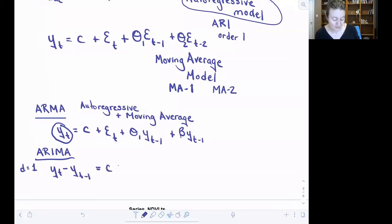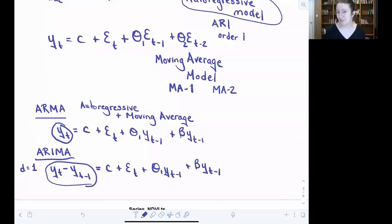Then I might fit y sub t minus y sub t minus 1 is equal to, and now, what we've been looking at for our modeling with the moving average component and the autoregressive component. And so it's the values being fit that change if you have something going on with that I or integrated component as opposed to adding more terms to the right.